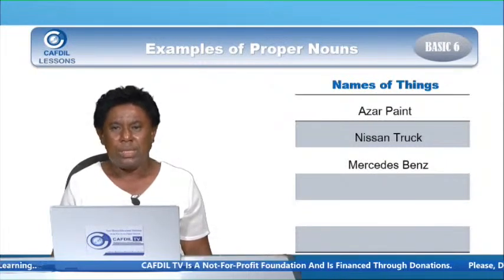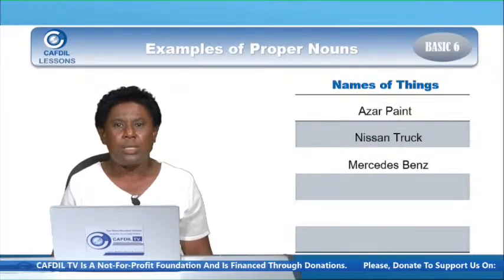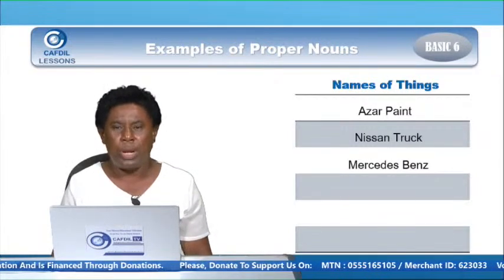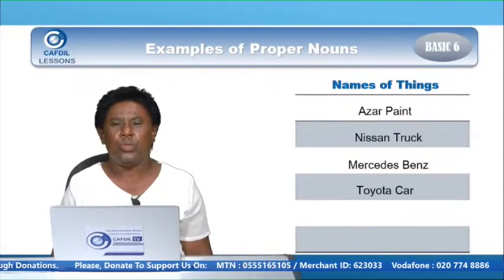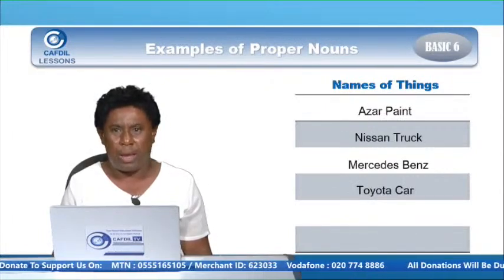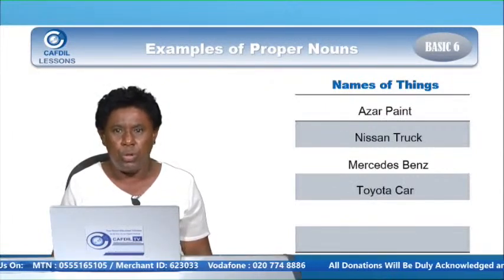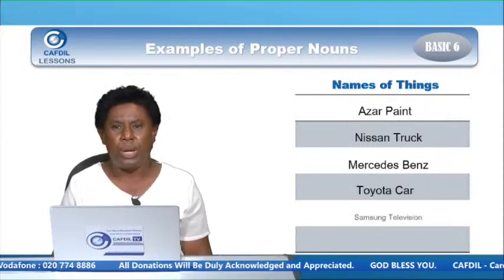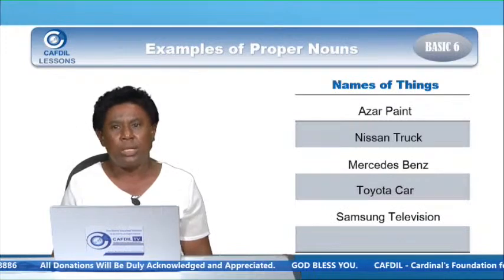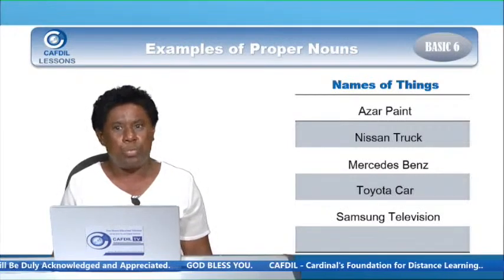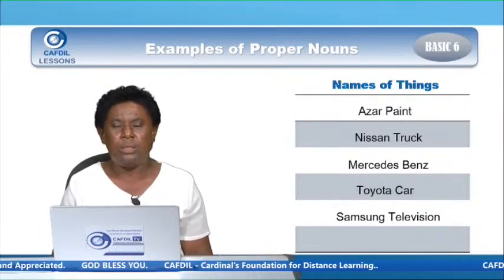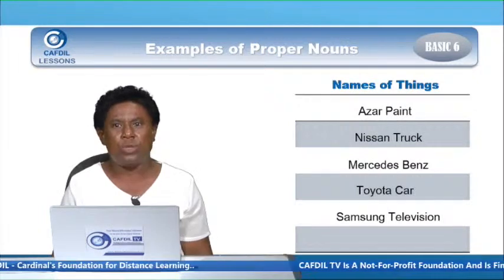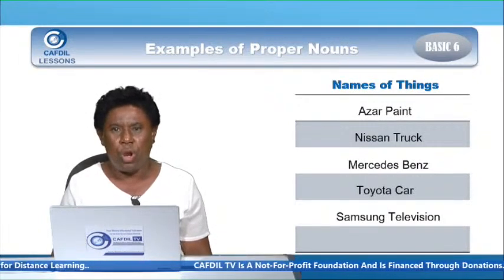Another type of thing — also a car: Mercedes Benz. It starts with capital M for Mercedes, capital B for Benz, because it's a proper noun, a particular name given to a car. We have Toyota car — another type of car having a particular name, Toyota car, starting with capital T for Toyota, capital C for car, because it's a proper noun. We have Samsung television — there are a lot of televisions with different brands, and this particular one is Samsung. It begins with capital S for Samsung, capital T for television, because it's a proper noun.